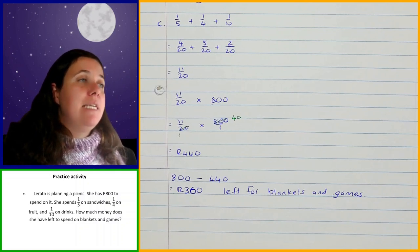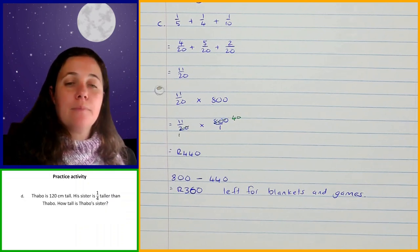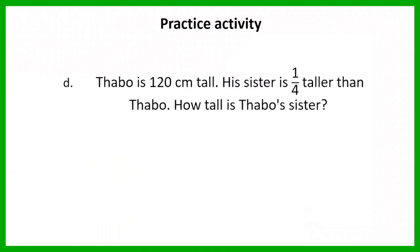Question D: Tabo is 120 centimeters tall. His sister is a quarter taller than Tabo. How tall is Tabo's sister? When it says his sister is a quarter taller, it means a quarter of his height taller than him. I'm going to give you two minutes to work this one out.